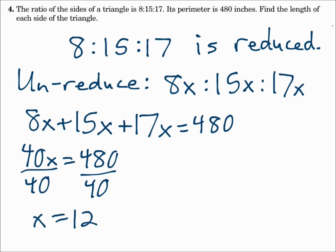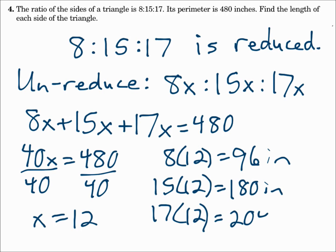So if x is 12, the original side lengths will be each of those numbers times the 12. 8 times 12 is 96 inches. 15 times 12 is 180 inches. And 17 times 12 is 204 inches.